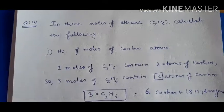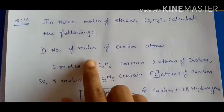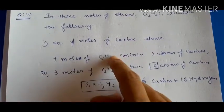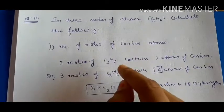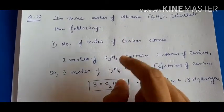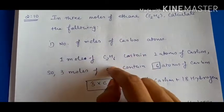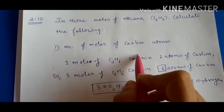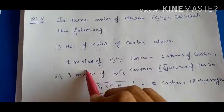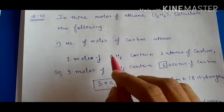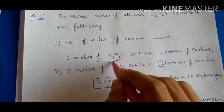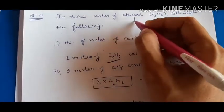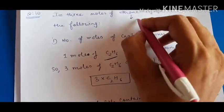Moving to question number ten, which is related to moles. One mole is equal to the atomic mass and also equals Avogadro's number, which is 6.022 × 10²³ molecules. The question asks about the number of moles of carbon atoms in one mole of ethane. Ethane's formula is C₂H₆ — it is the second family member of hydrocarbons.